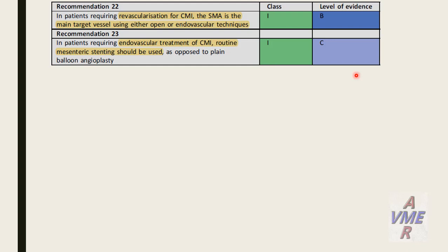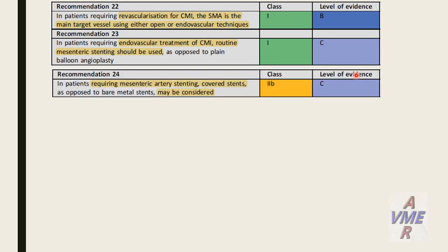In patients undergoing endovascular treatment for chronic mesenteric ischemia, routine mesenteric stenting should be used as opposed to plain balloon angioplasty. In patients requiring a mesenteric artery stent, a covered stent as opposed to a bare-metal stent may be considered.